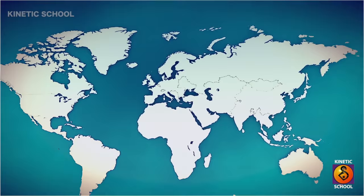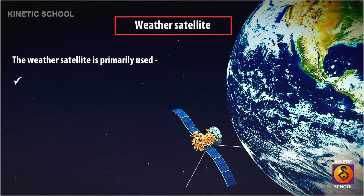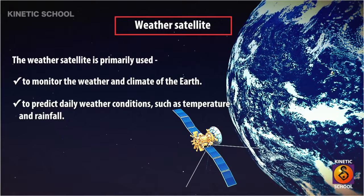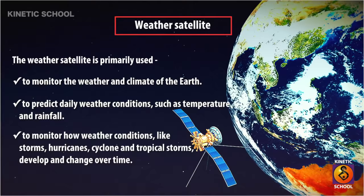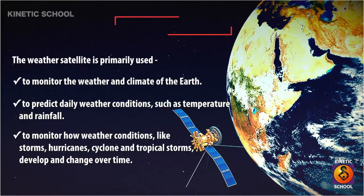Weather satellites are primarily used to monitor the weather and climate of the Earth, to predict daily weather conditions such as temperature and rainfall, and to monitor how weather conditions like storms, hurricanes, cyclones, and tropical storms develop and change over time.